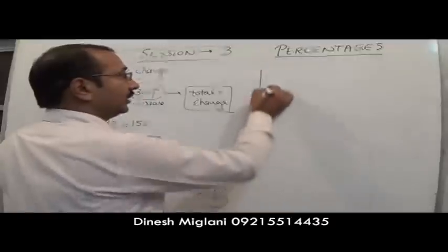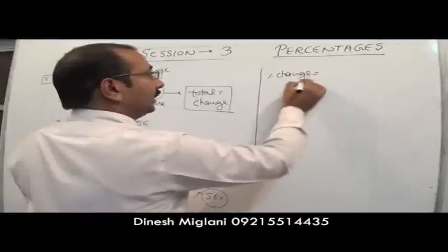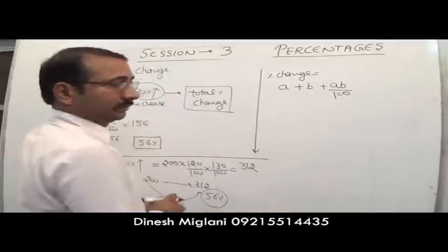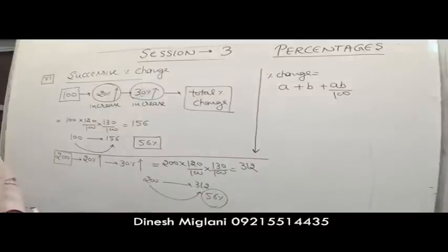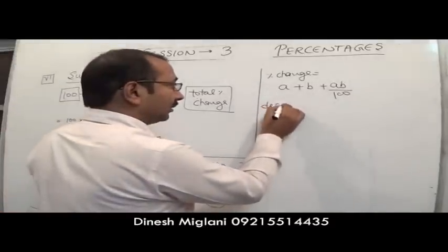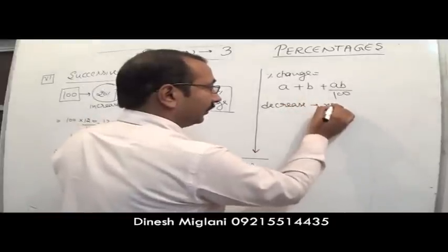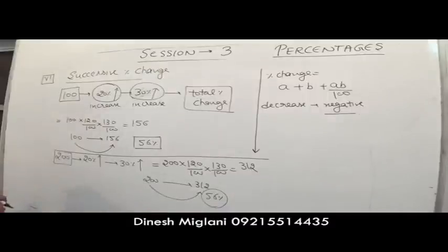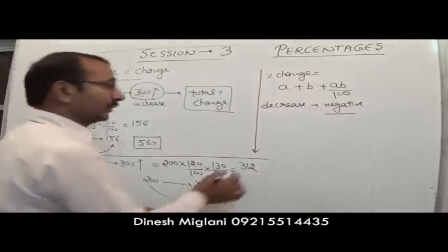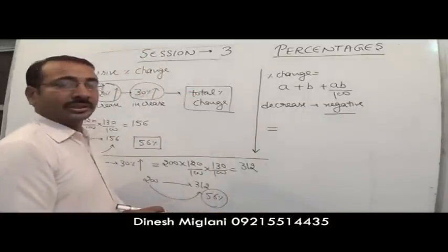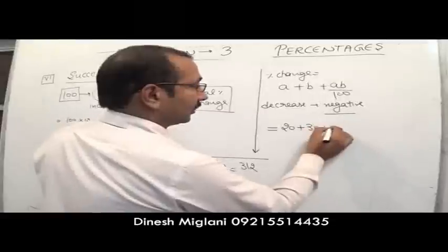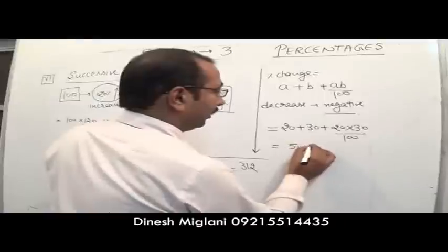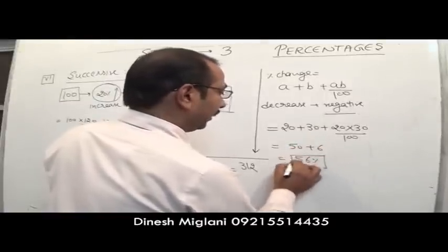The formula is: a + b + (a × b)/100. If there is a decrease, take that value as negative. For example, first increased by 20%, then by 30%: 20 + 30 + (20 × 30)/100 = 50 + 6 = 56%.